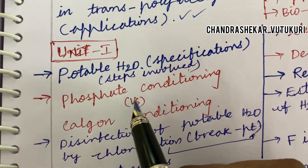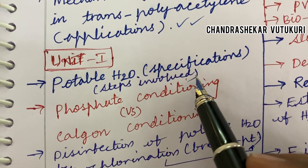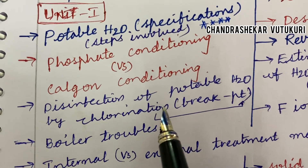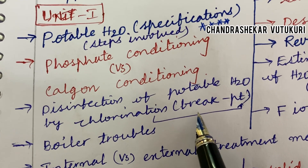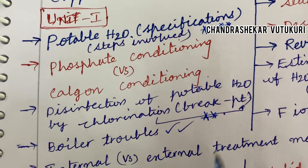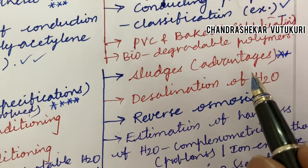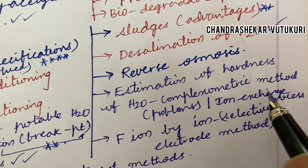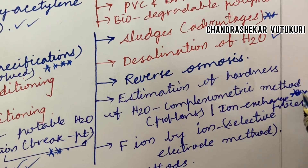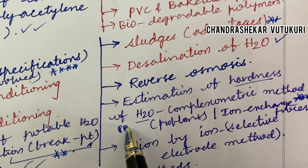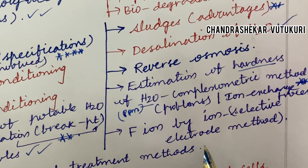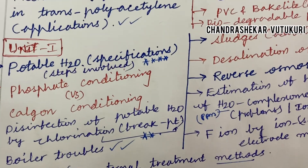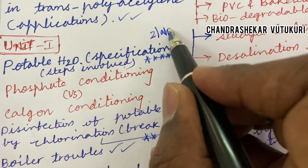Unit 1 is very easy — it is all about portable water specifications, and the steps involved may be the topmost question. Phosphate conditioning versus coagulation conditioning, and disinfection of portable water by chlorination and the breakpoint chlorination, may be topmost questions. Boiler troubles may be a short question. Sludges and their advantages, desalination of water, reverse osmosis, estimation of hardness of water by complexometric method, and problems on ion exchange process are also important. Finding hardness in PPM and the ion selective electrode method are topmost questions. Internal versus external treatment methods is also very important.